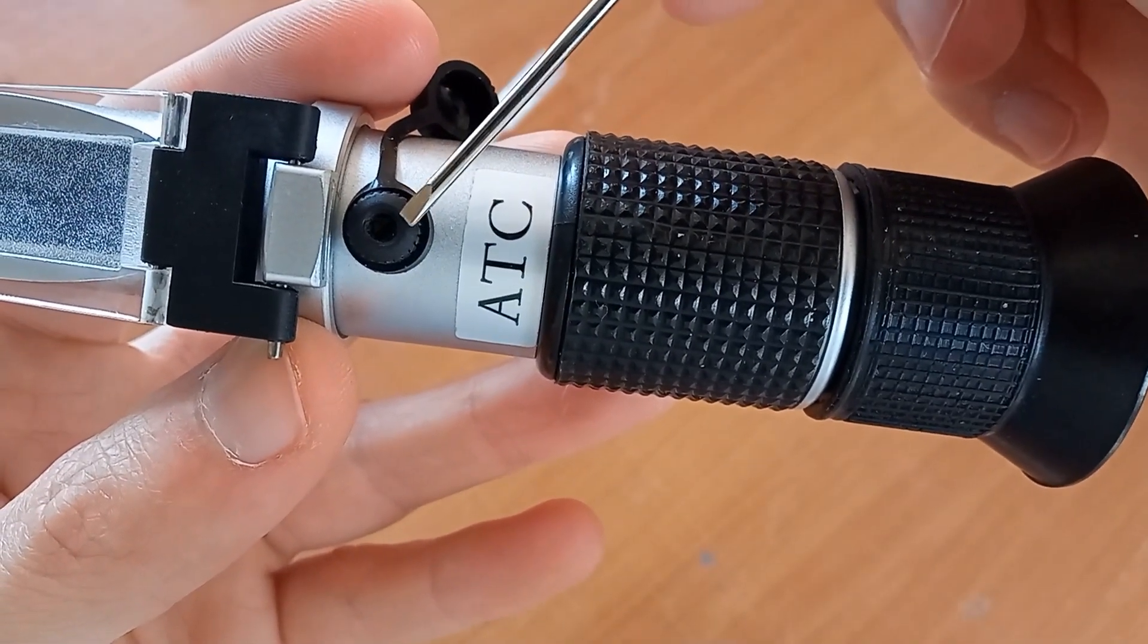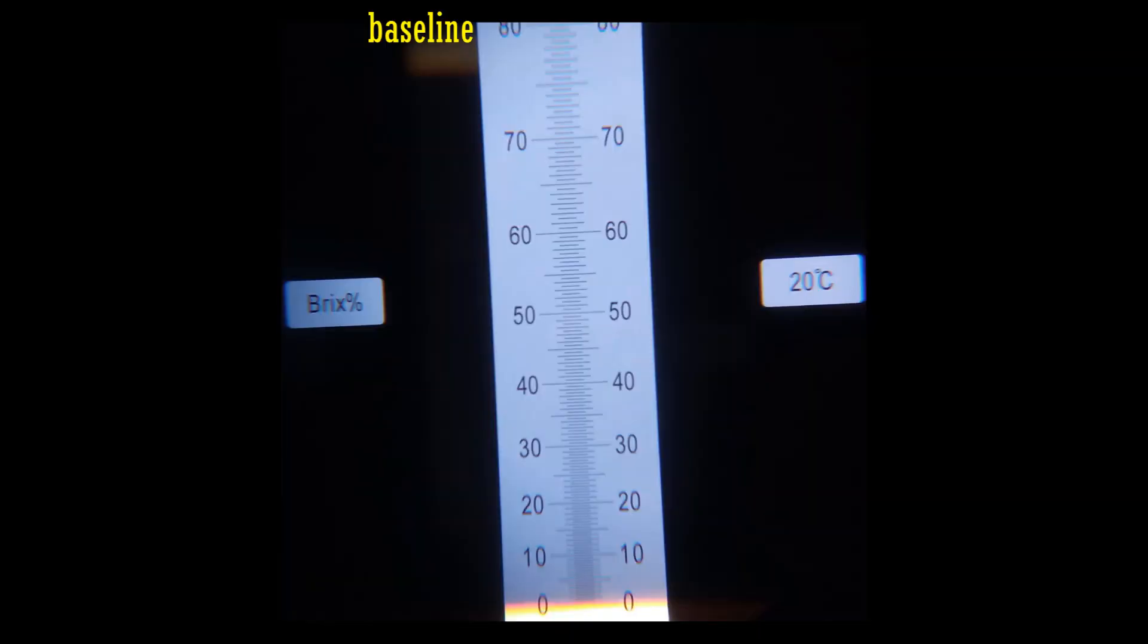This guarantees stability of measurements from 20 to 30°C. In fact, as you can see, water at 23°C gives zero BRIX.